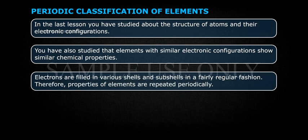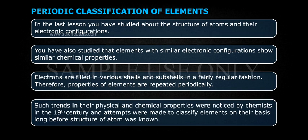Electrons are filled in various shells and sub-shells in a fairly regular fashion. Therefore, properties of elements are repeated periodically. Such trends in their physical and chemical properties were noticed by chemists in the 19th century, and attempts were made to classify elements on their basis long before the structure of the atom was known.